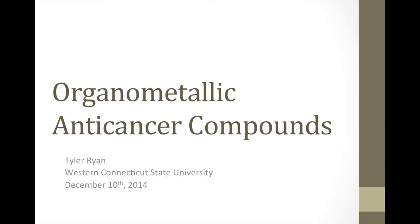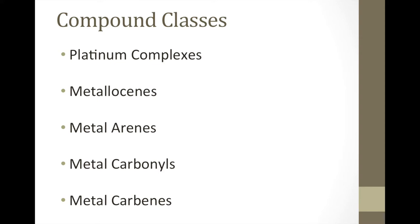First we're going to look at some different compound classes of organometallic cancer drugs. Organometallic means there will be a metal involved and usually some organic component. We'll be strictly speaking of those drugs only. So we'll look at some platinum complexes, metallocenes, metal arenes, metal carbonyls, and metal carbenes.